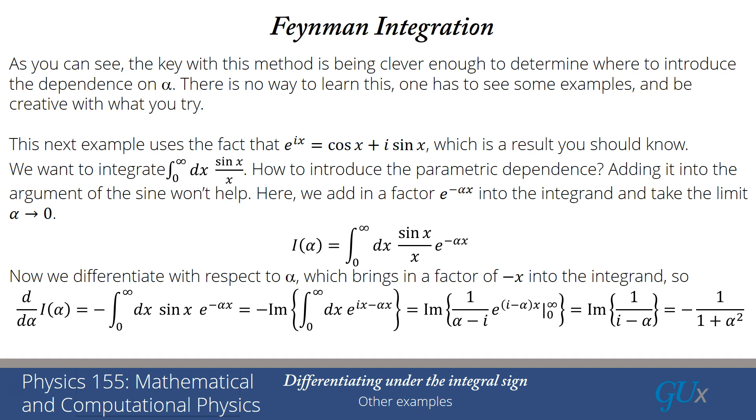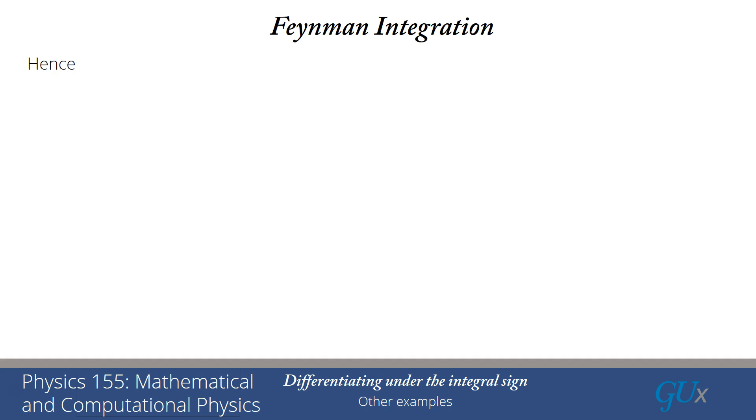So now look at what we've done. We've determined what the derivative of this integral is with respect to alpha, and it's equal to something that we can recognize as an antiderivative of a function we already know. The derivative is minus 1 over 1 plus alpha squared. You should recall 1 over 1 plus alpha squared is the derivative of the arctangent of alpha. So i of alpha is just equal to minus arctangent of alpha plus some constant. And we now need to figure out how do we determine the constant.